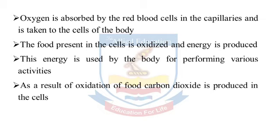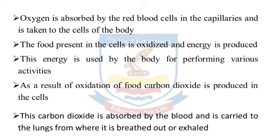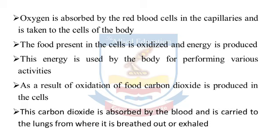As a result of oxidation of food, carbon dioxide is produced in the cells. Cells mein khoraak ki oxidation ke nateeje mein carbon dioxide bhi paida hoti hai. This carbon dioxide is absorbed by the blood and is carried to the lungs from where it is breathed out or exhaled. Yeh carbon dioxide cells se blood mein jazb ho jaati hai jo ise phephdon ki taraf le jaata hai aur wahan se phir use saans ke zariye bahar nikal diya jaata hai.